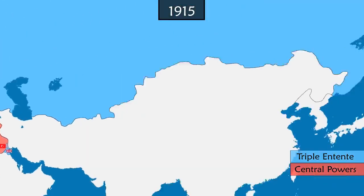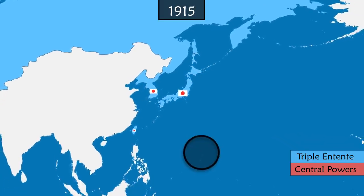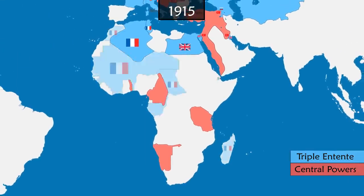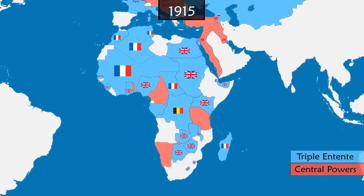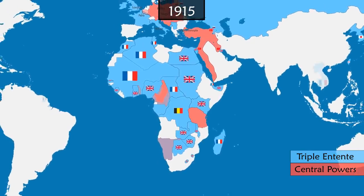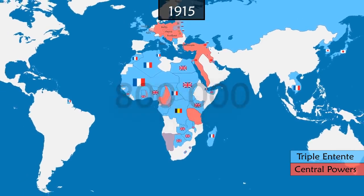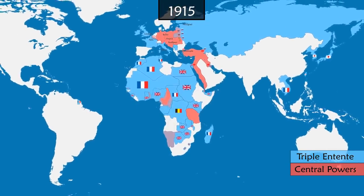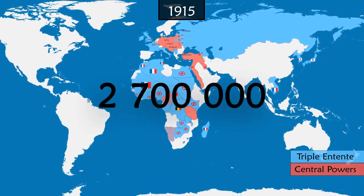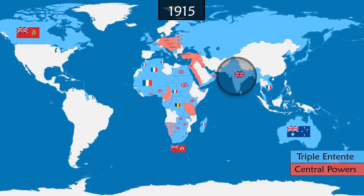In Asia, Japan went to war against Germany and seized its colonies in the Pacific and China. In Africa, German colonies are stormed by French, British and Belgian forces. Many people from colonized territories are enlisted in European armies. France mobilizes nearly 800,000 people, a large proportion of whom are sent to Europe. The British Empire enlists 2.7 million men from its dominions and colonies, more than half of whom come from British India.